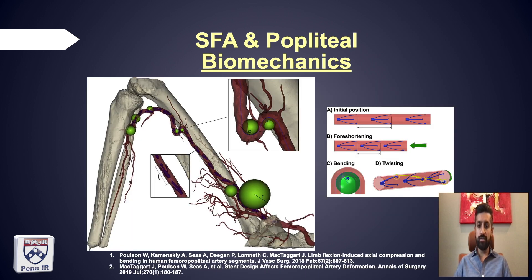They performed a variety of calculations based on the markers. A represents normal position, B represents markers for shortening or axial compression, D represents twisting, and C represents bending, where they marked the central string as a centerline and calculated the radius. Smaller spheres on the diagram represent more severe bending. The most severe points were at the adductor hiatus — commonly with two bends in an S-configuration — and second, right across the knee joint. There were also mild-to-moderate bending points at the proximal SFA and more severe bending at the distal POP and TP trunk.